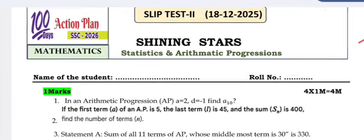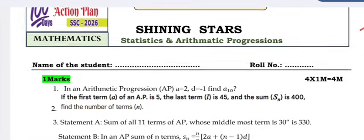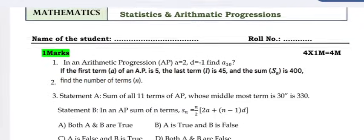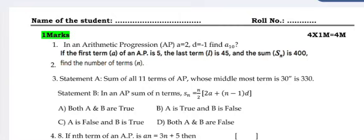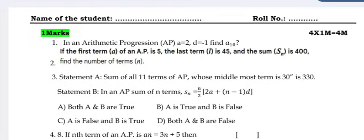This video is relating to the slip test 2 of shining stars, subject mathematics, topic statistics and arithmetic. Question one: In an arithmetic progression AP, a is equal to 2, d is equal to minus 1, find a₁₀.